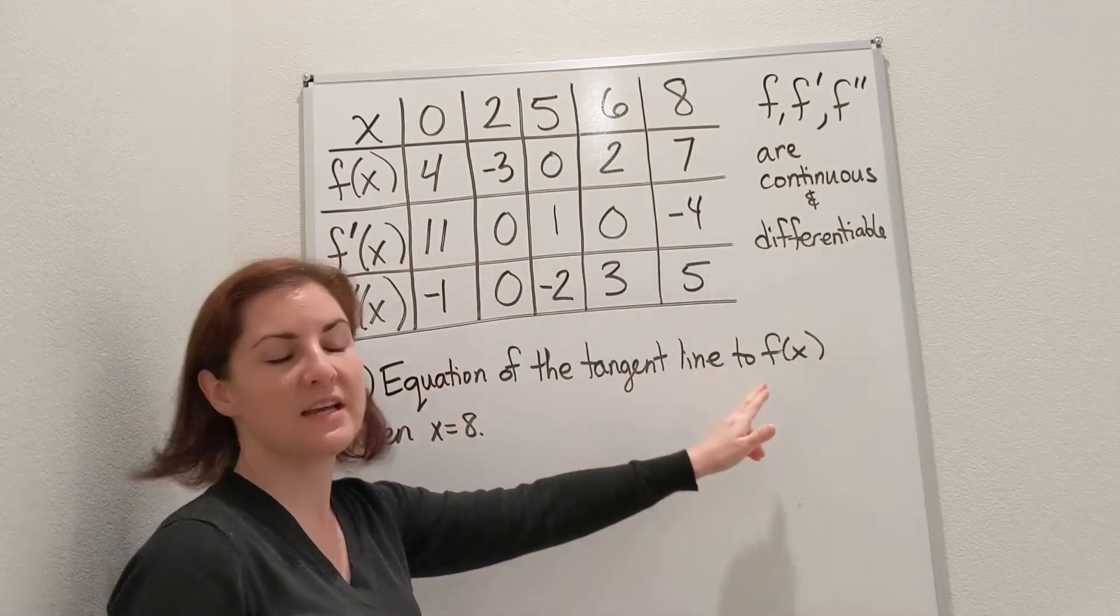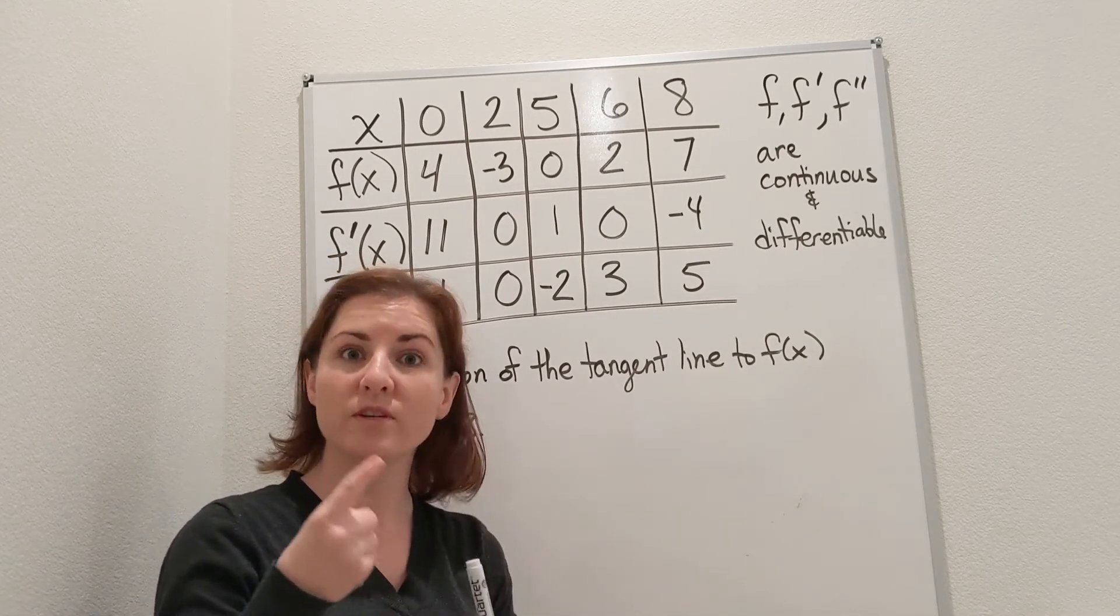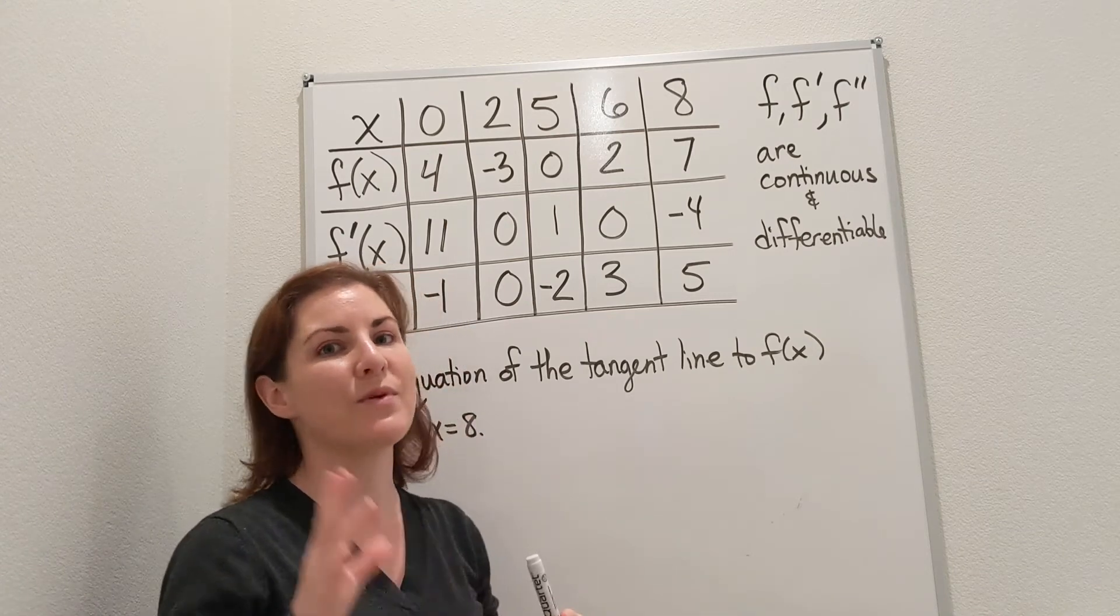So if I want the equation of the tangent line, there are two things that I need. I need a point, and I need the slope. The point comes from the original function, and the slope is going to come from the function's derivative.